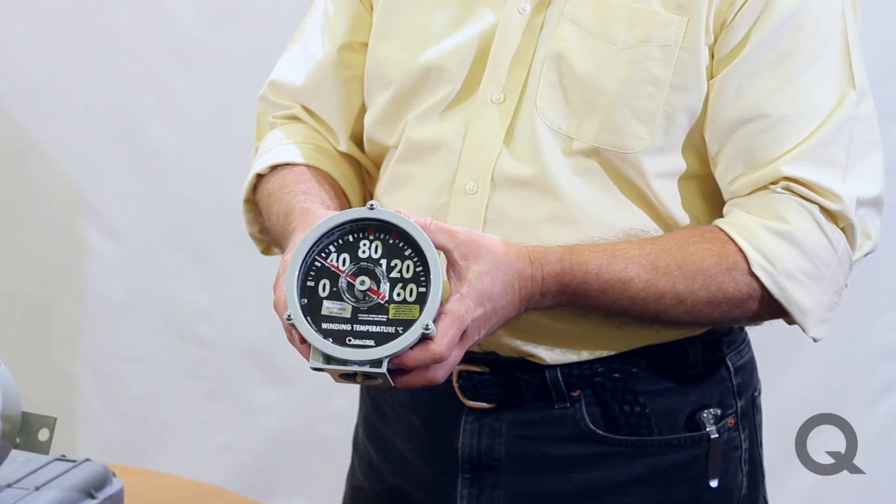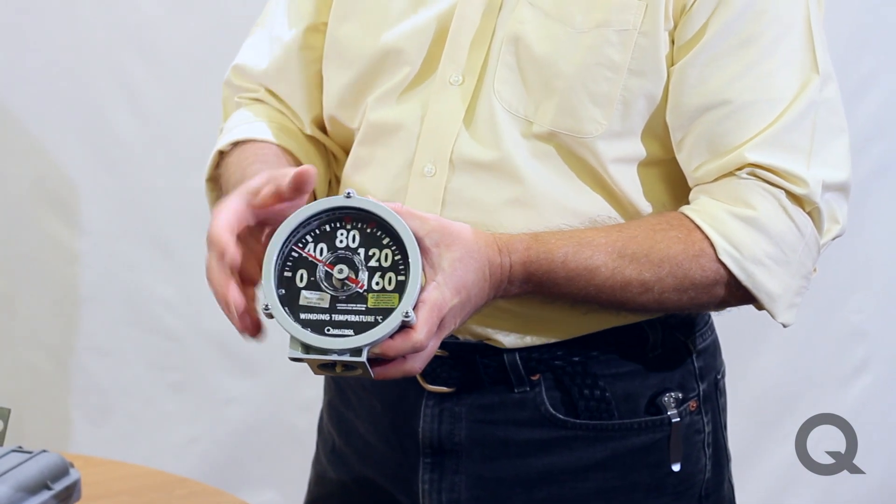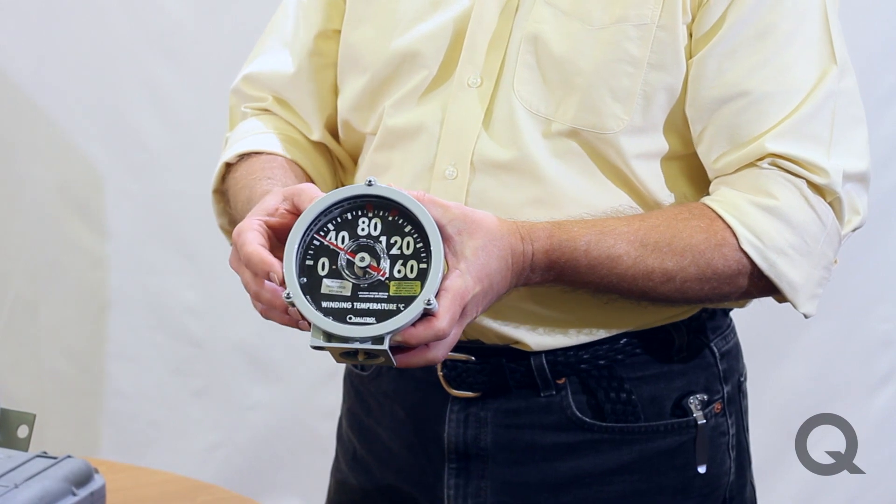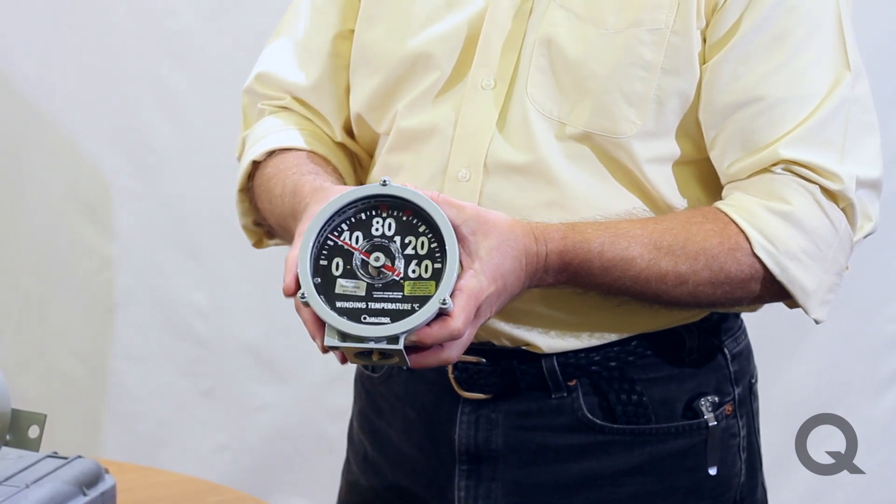The dial range is going to be important. Some winding temperatures will run zero to 160, some will run zero to 220. Liquid temperatures will run zero to 120, typically.